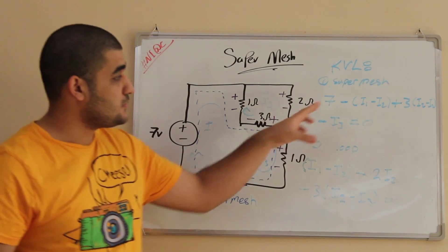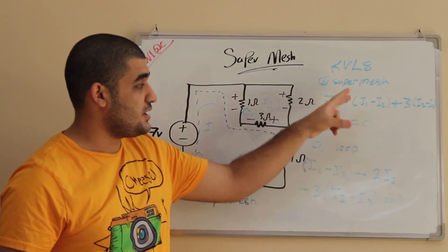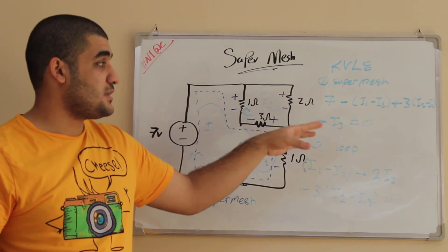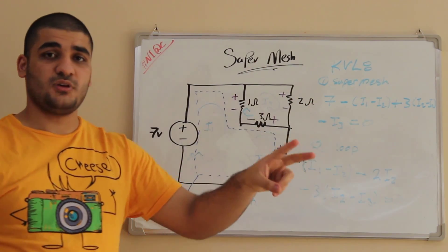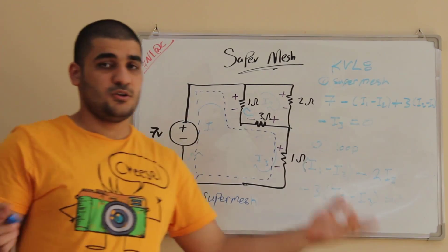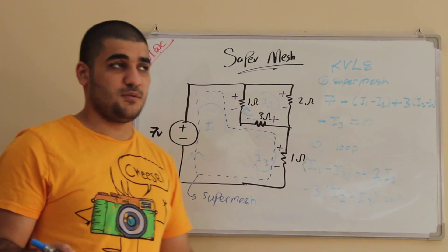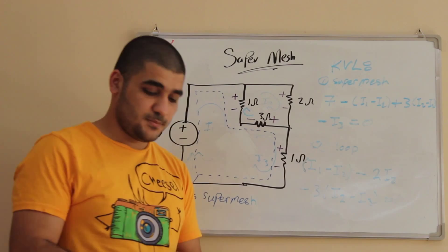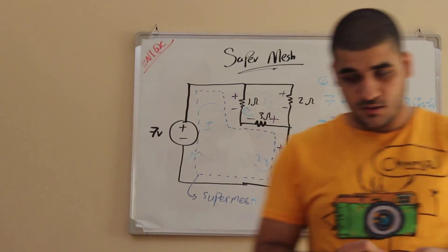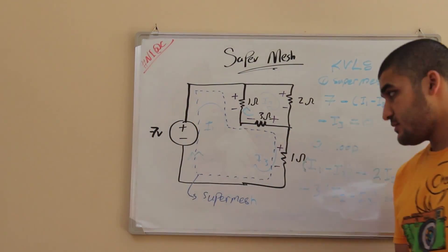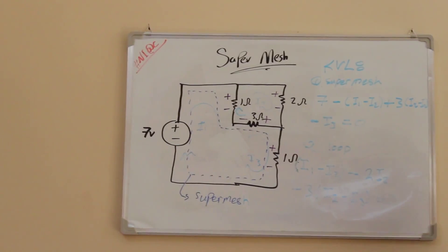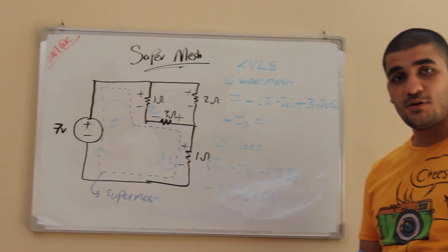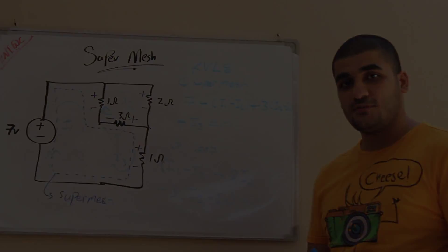Now you have to simplify these equations, and you will get at the end two unknowns and two equations. You can solve them by substitution method or by matrices. At the end, we come to the end of this lesson. I'll give you some time to review this information and then we will continue.